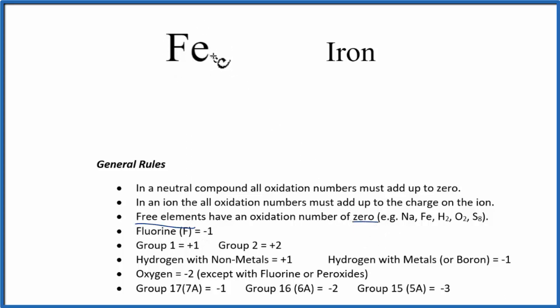So iron Fe, it's just zero. And the reason is, think about it, oxidation numbers are when we have elements bonded to each other and there's an exchange of electrons. Here, it's just Fe, so there's no exchange of electrons. The oxidation number is zero.